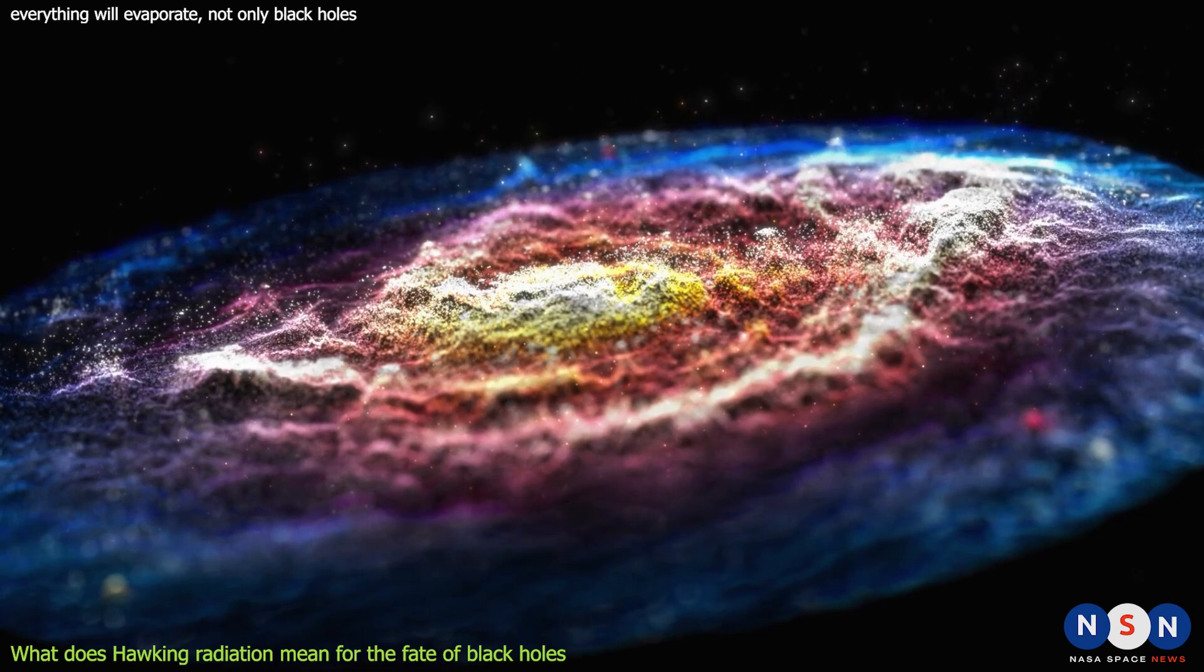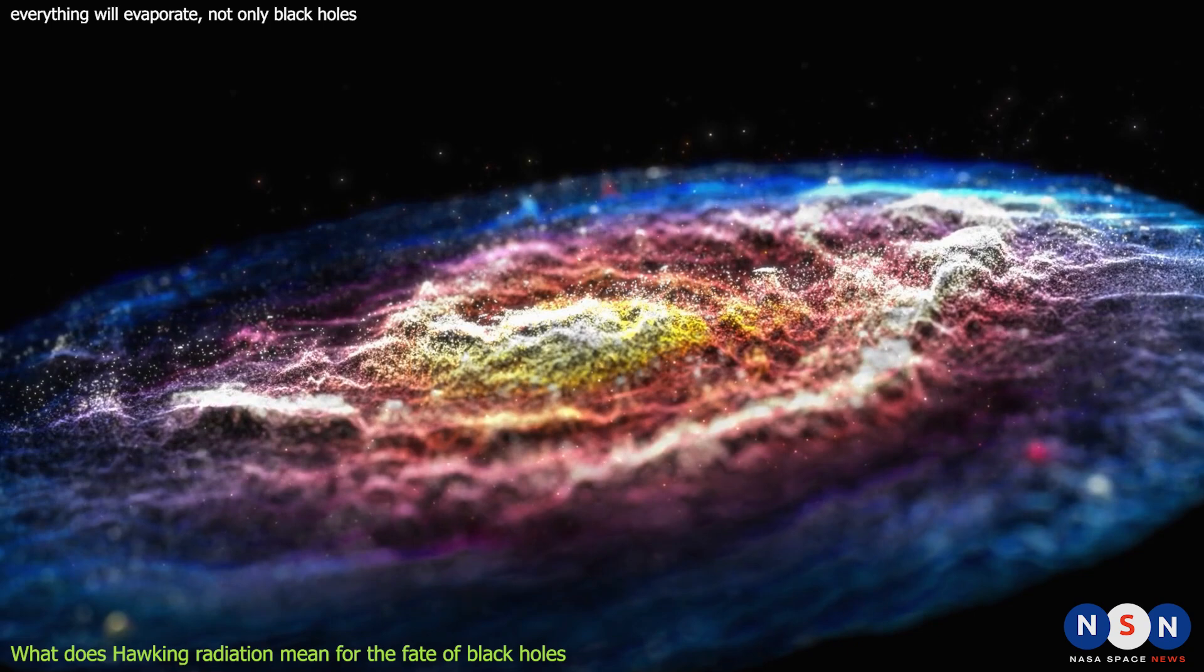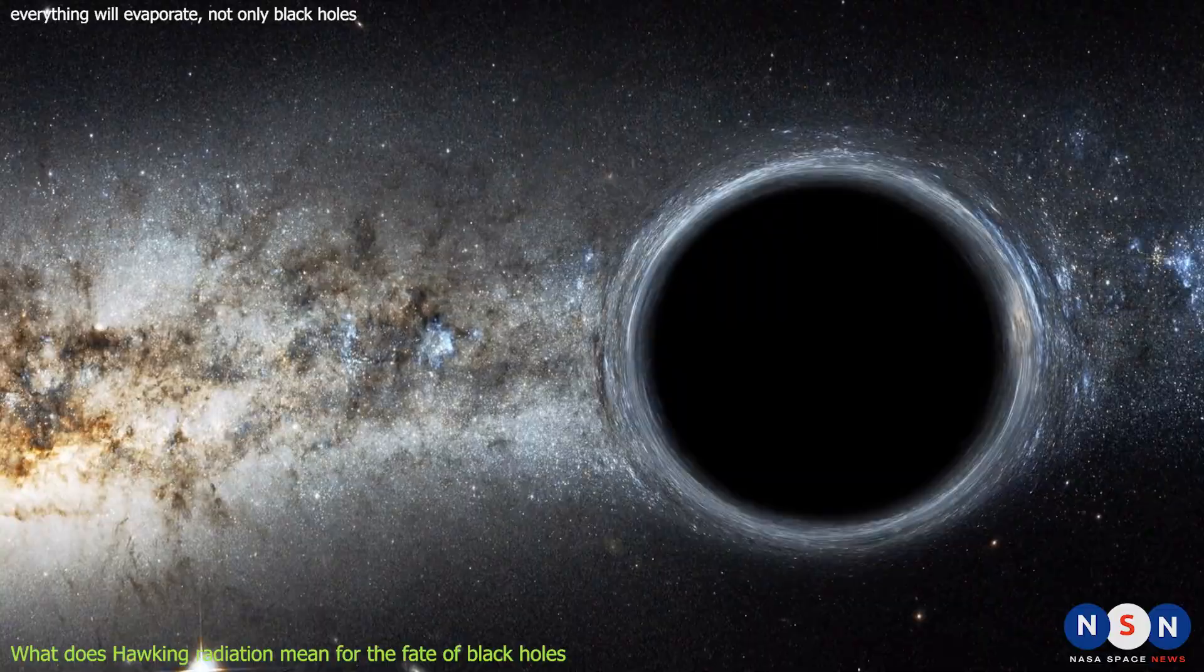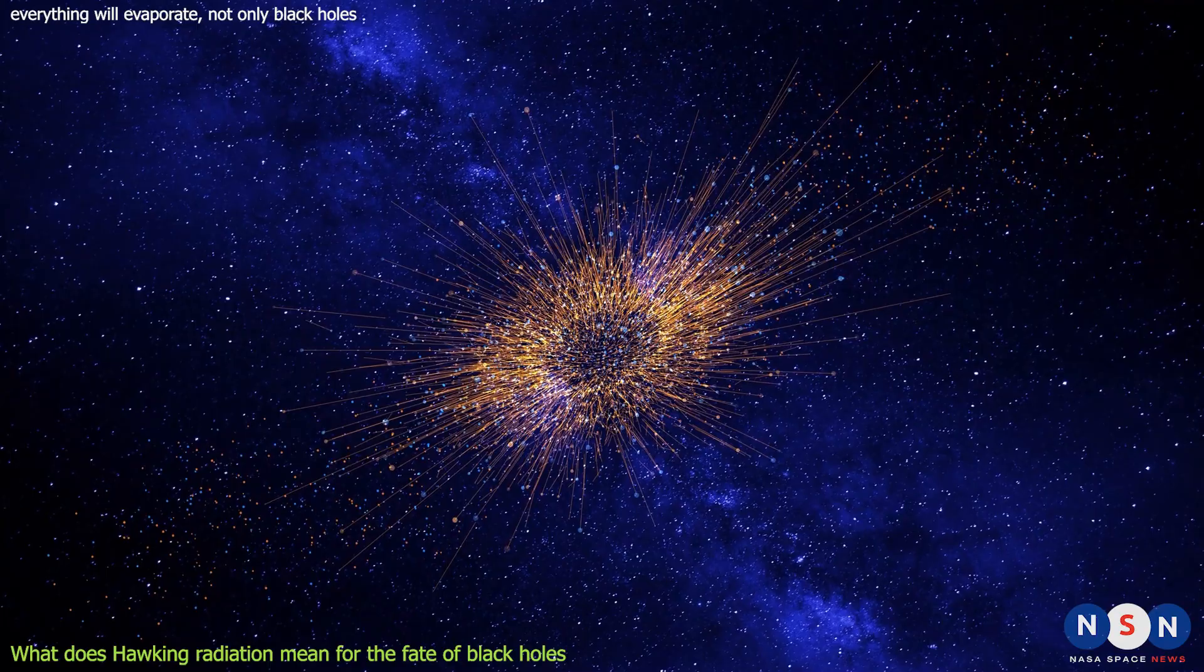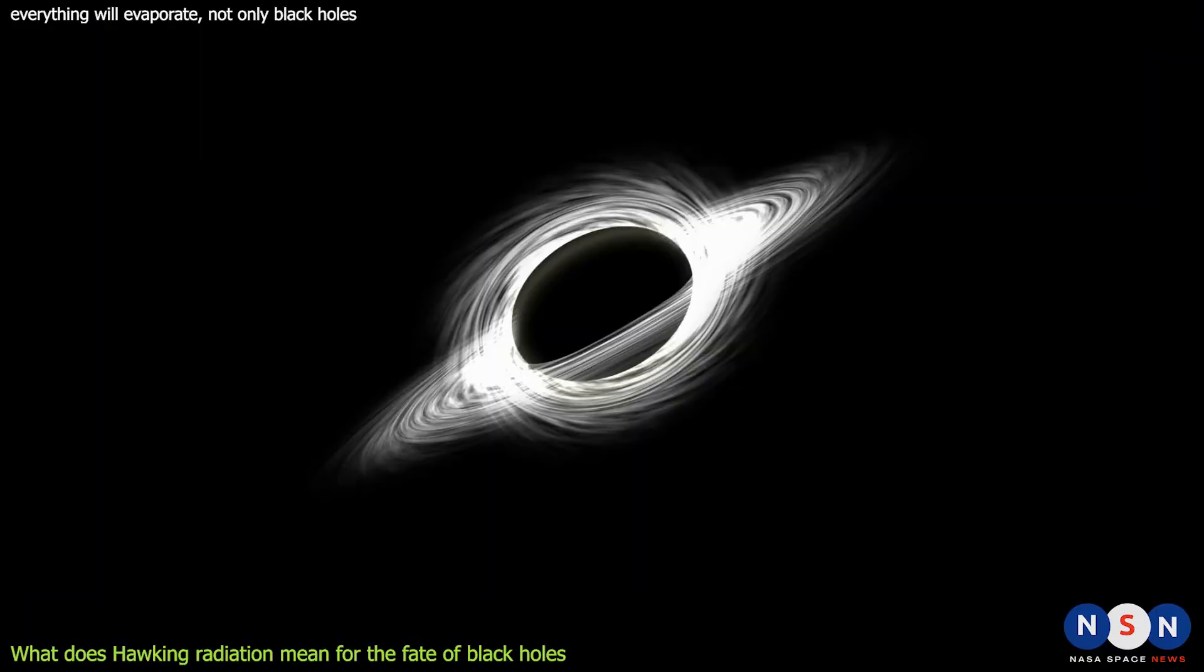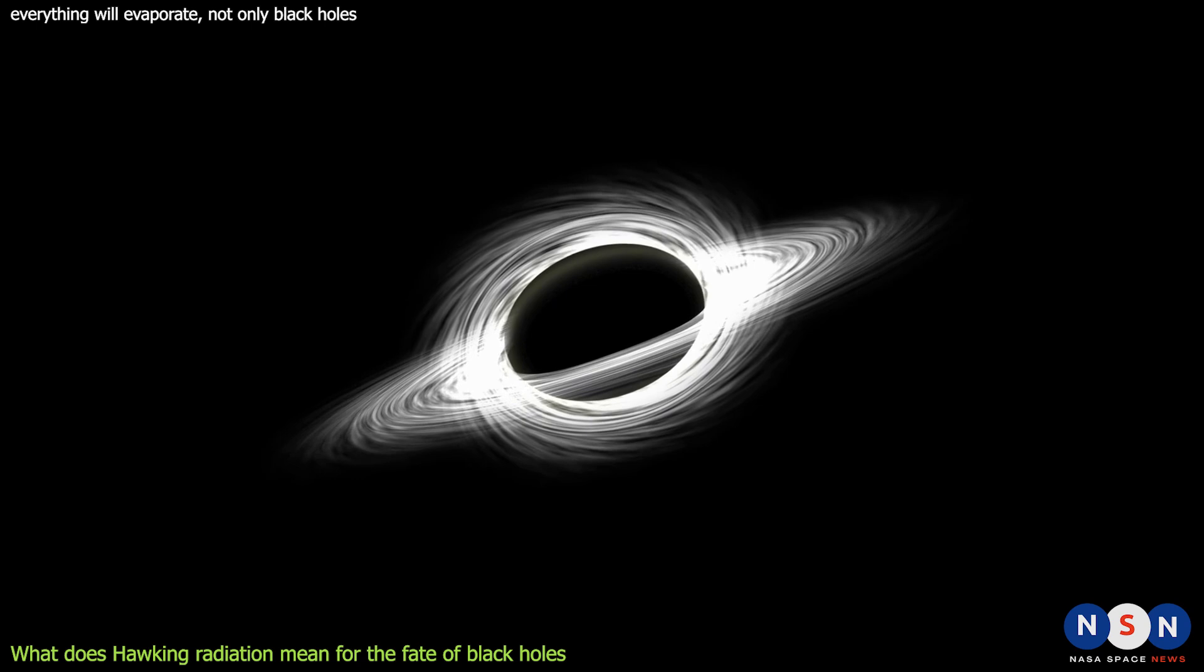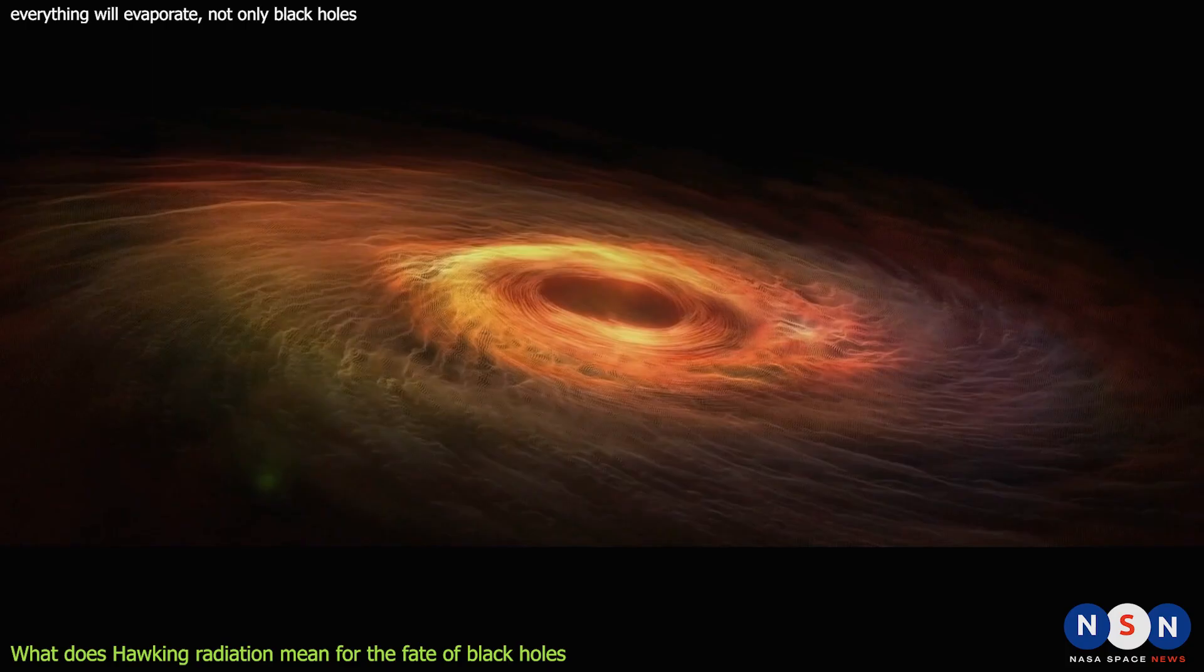One of the ways to test Hawking radiation is to look for evidence of primordial black holes, which are hypothetical black holes that formed in the early stages of the universe. These black holes could have masses ranging from subatomic particles to planets, and they could be evaporating today, producing detectable signals of gamma rays or gravitational waves. However, so far no conclusive observation of primordial black holes has been made.